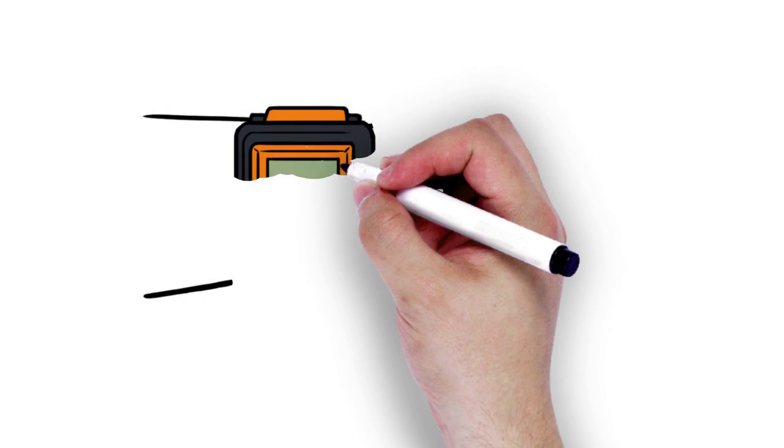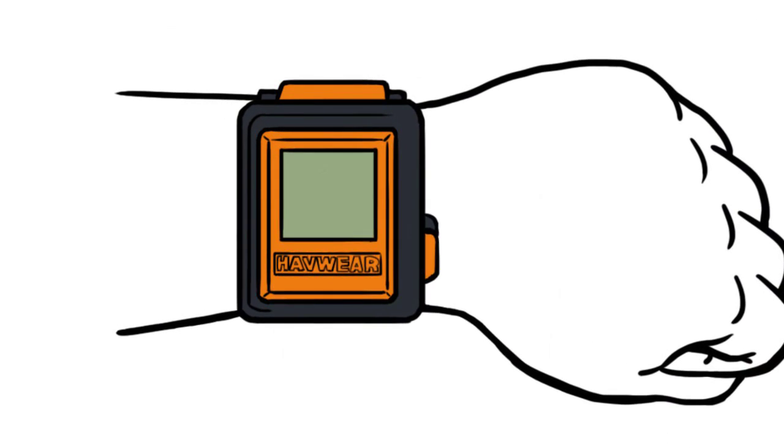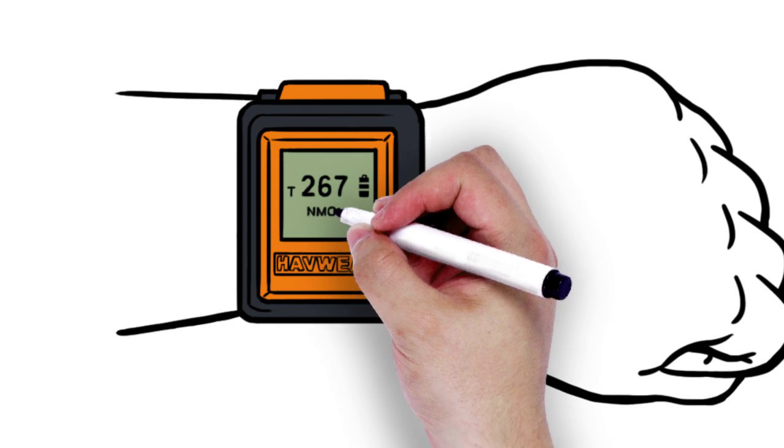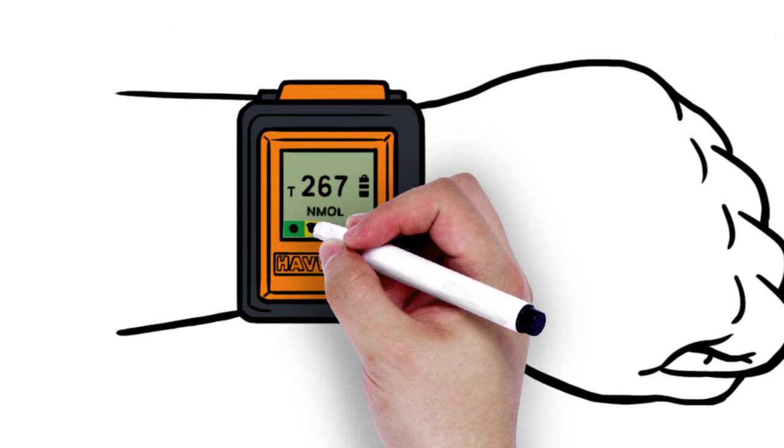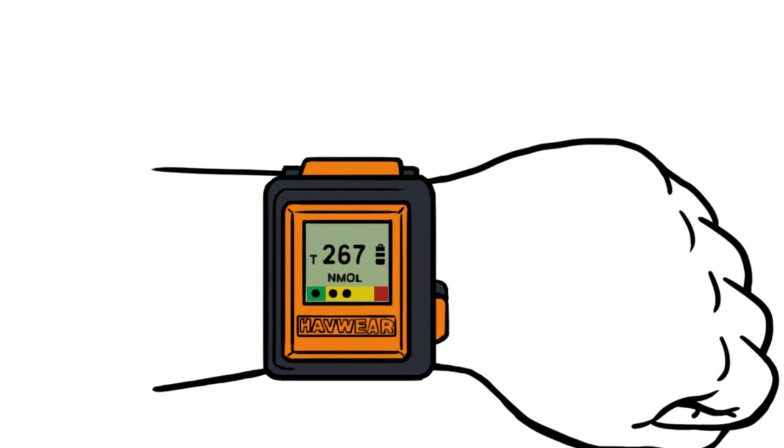The Havware is wrist mounted to provide a truly personal monitoring experience. It calculates and displays in real-time exposure points to inform the wearer of their exposure to vibration and thresholds reached.